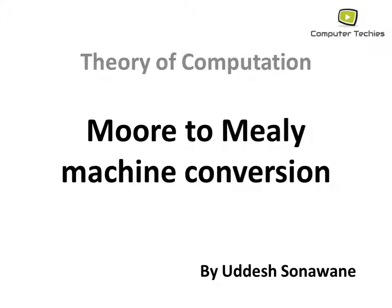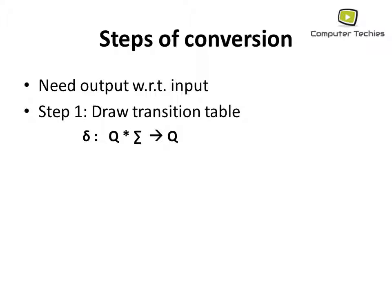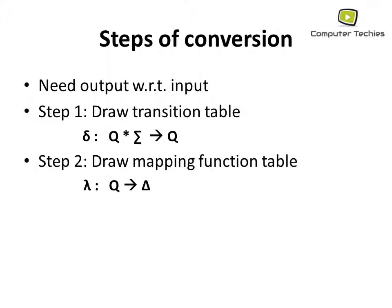Hello friends, welcome to Computer Techies. Today we will discuss Moore to Mealy machine conversion. We need to follow some steps of conversion. First, we need output with respect to input — this is our requirement. Next, Step 1: draw the transition table of the given Moore machine using delta such that Q × Σ gives Q. Step 2: draw the mapping function table lambda such that Q gives the output — meaning every output is mapped to a state.